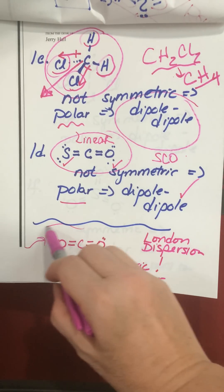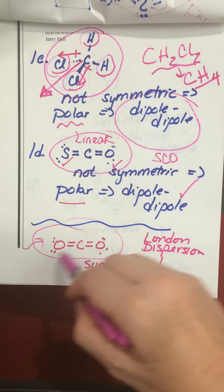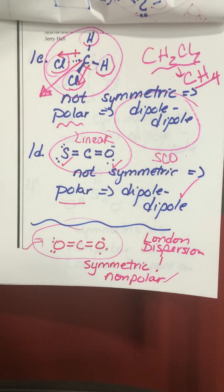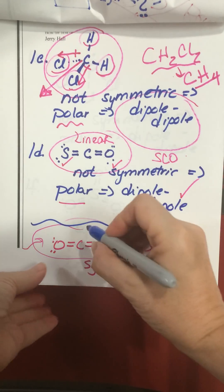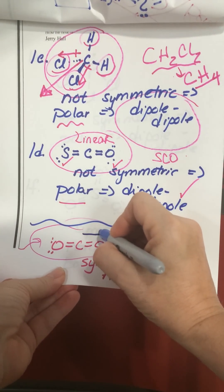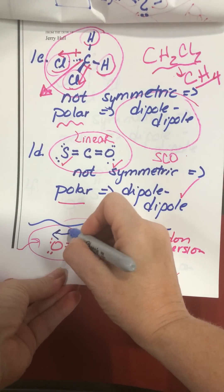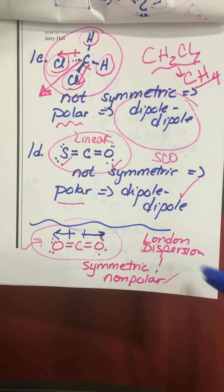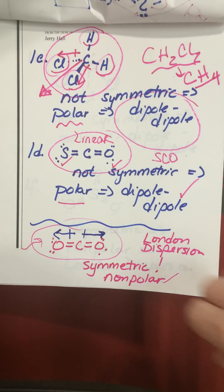I drew carbon dioxide at the bottom because it's such similar structure to the SCO. In this case though, because you have oxygens on both ends, the structure is symmetric and therefore carbon dioxide is nonpolar. Carbon dioxide, even though it has polar bonds, they oppose each other and cancel out. So there is no net polarity to carbon dioxide, and it only has London dispersion forces.